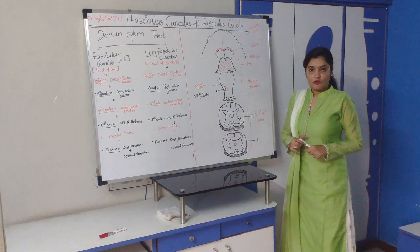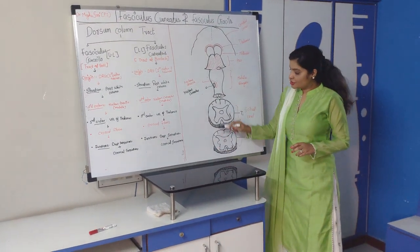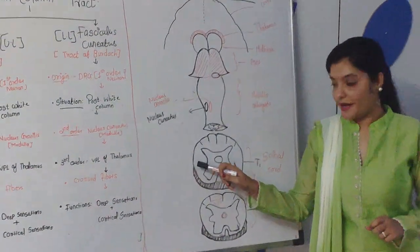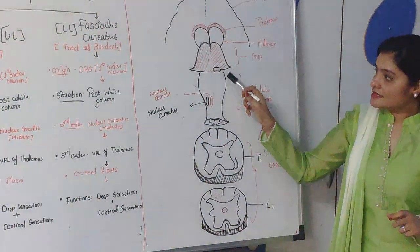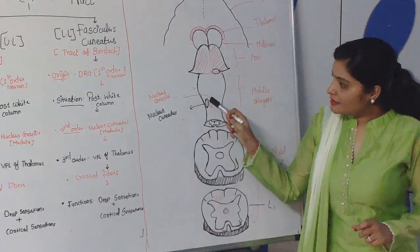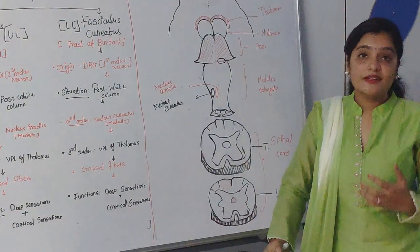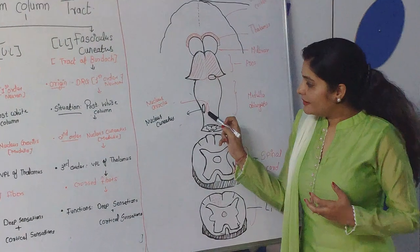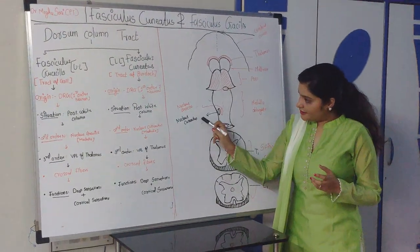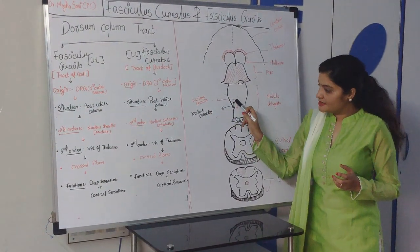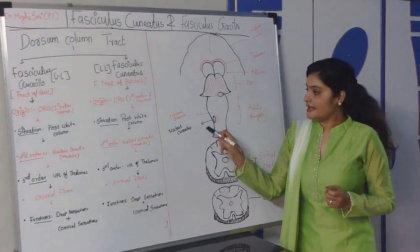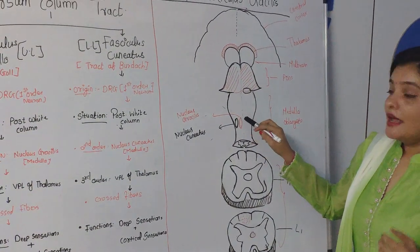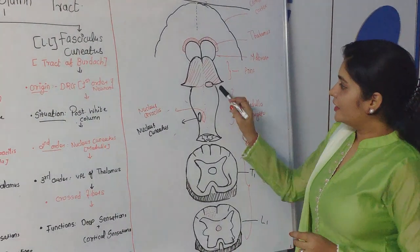First I would like to show you the anatomical part. This is the cross section of the spinal cord at the L1 level. This is the medulla oblongata. Can you see these two nuclei situated in the medulla oblongata? The red one is nucleus gracilis and the second one is nucleus cuneatus. These are situated in the lower part of the medulla oblongata.